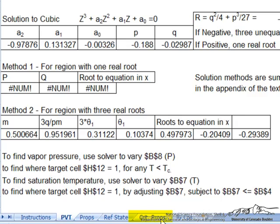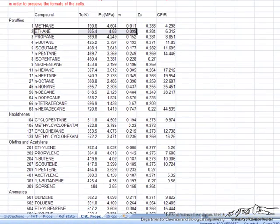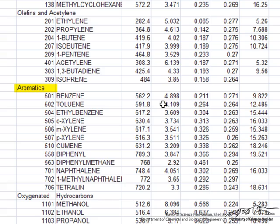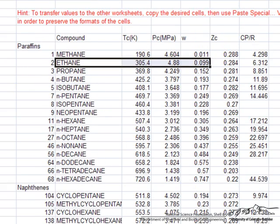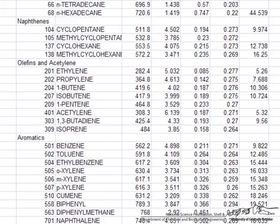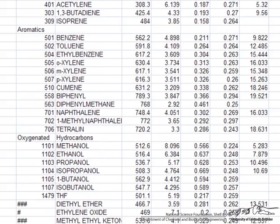The first thing we need to do, and we're going to do this for toluene. We go to the tab that has the critical properties. Under aromatics we find toluene. Notice what it's listing: the critical temperature, the critical pressure, and the acentric factor. These are formatted in the same way as they appear on the other page that we started on.